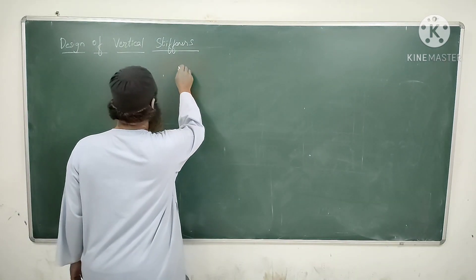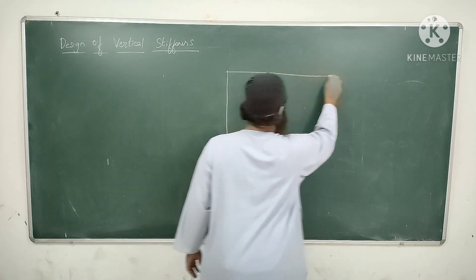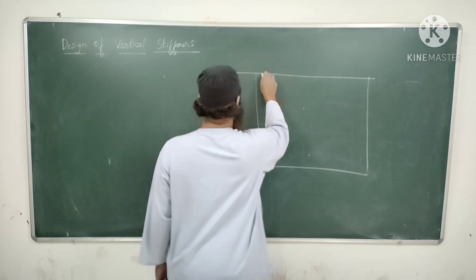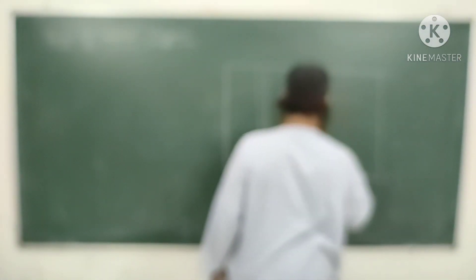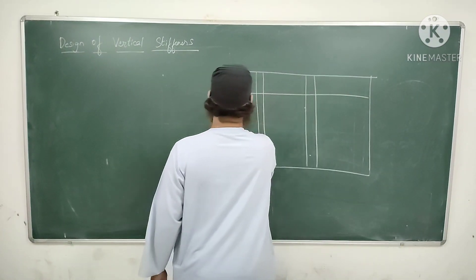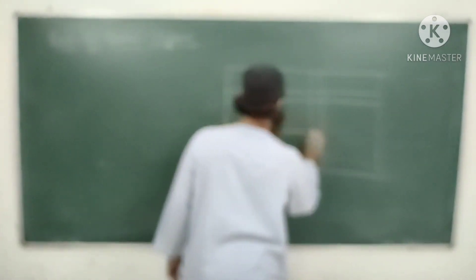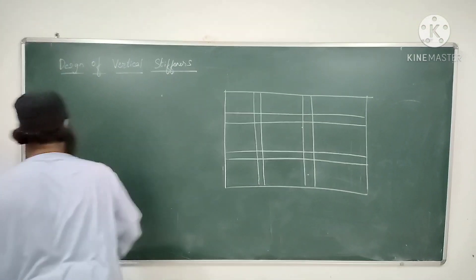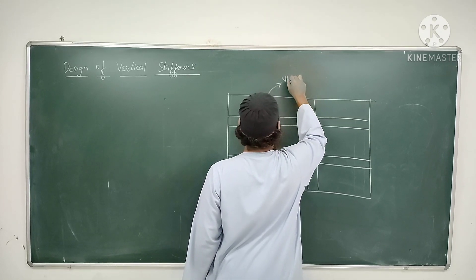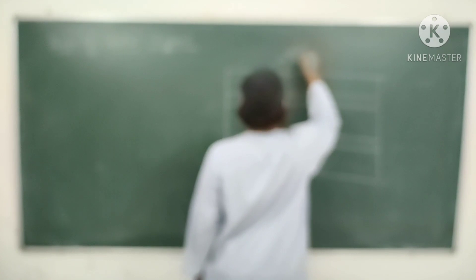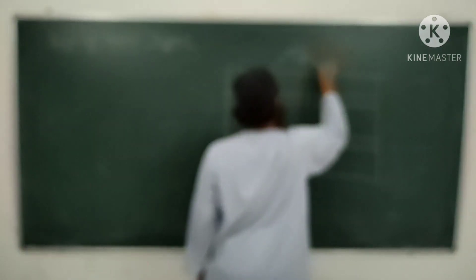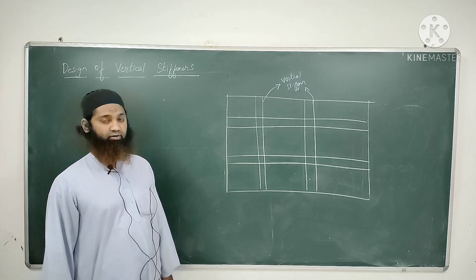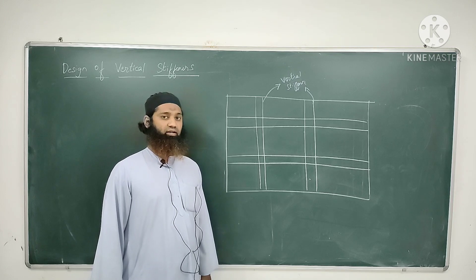Let us first do a recap — what is a vertical stiffener? As I hope you all can recollect, if this is your plate girder, vertical stiffeners are basically provided in between at a distance. We will be seeing what should be that distance and where it should be provided. This is your vertical stiffener — also called as intermediate stiffeners. Now why are the vertical stiffeners provided?